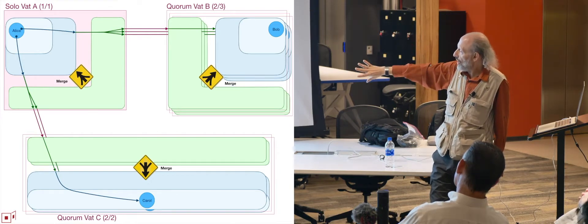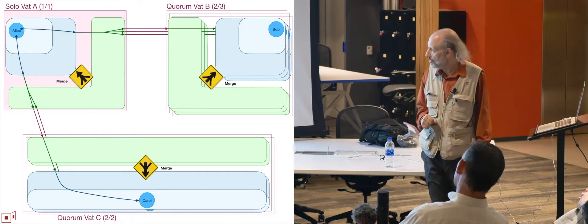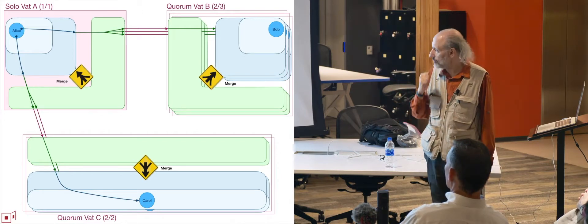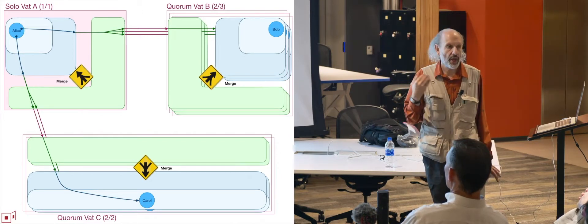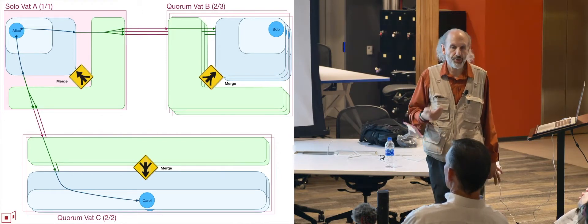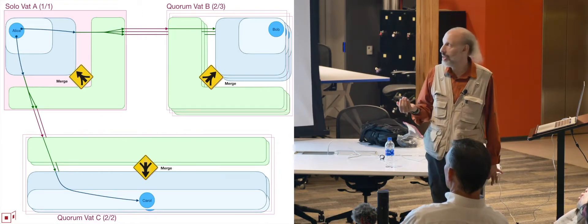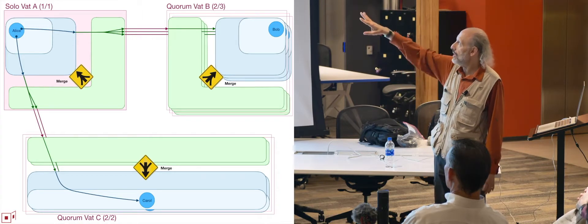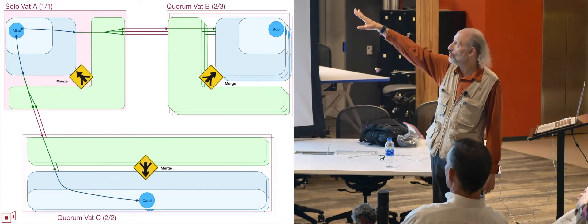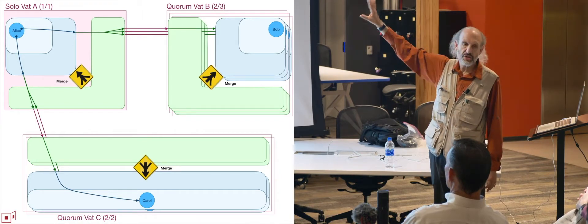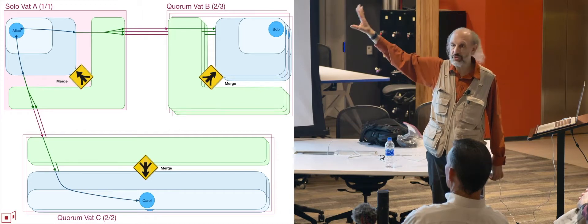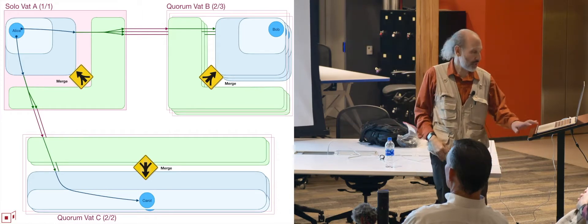The definition of VAT-B is the enumeration of the three participants and the thresholding rule that anything two out of three of them agreed on is by definition what VAT-B did. VAT-C at the bottom is a two-out-of-two VAT, so it only proceeds with unanimity. And VAT-A, shown as a one-out-of-one VAT, is really just the same old degenerate case of a solo machine.